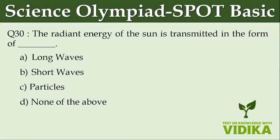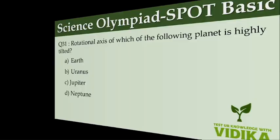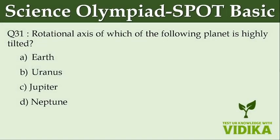The radiant energy of the Sun is transmitted in the form of dash. Option A: long waves. Option B: short waves. Option C: particles. Option D: none of the above.